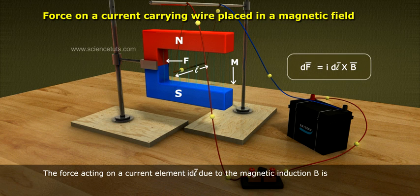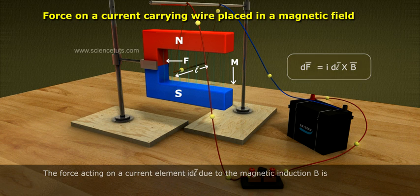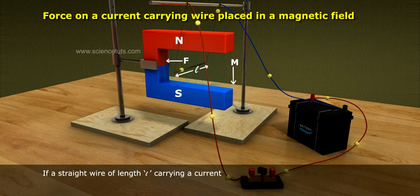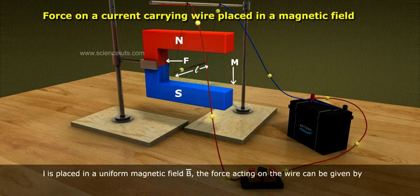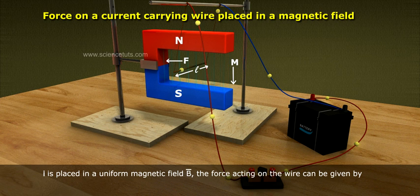The force acting on a current element I dL bar due to the magnetic induction B bar is F bar equals to I dL bar cross B bar. If a straight wire of length L carrying a current I is placed in a uniform magnetic field B bar, the force acting on the wire can be given by F bar equals to I L bar cross B bar.